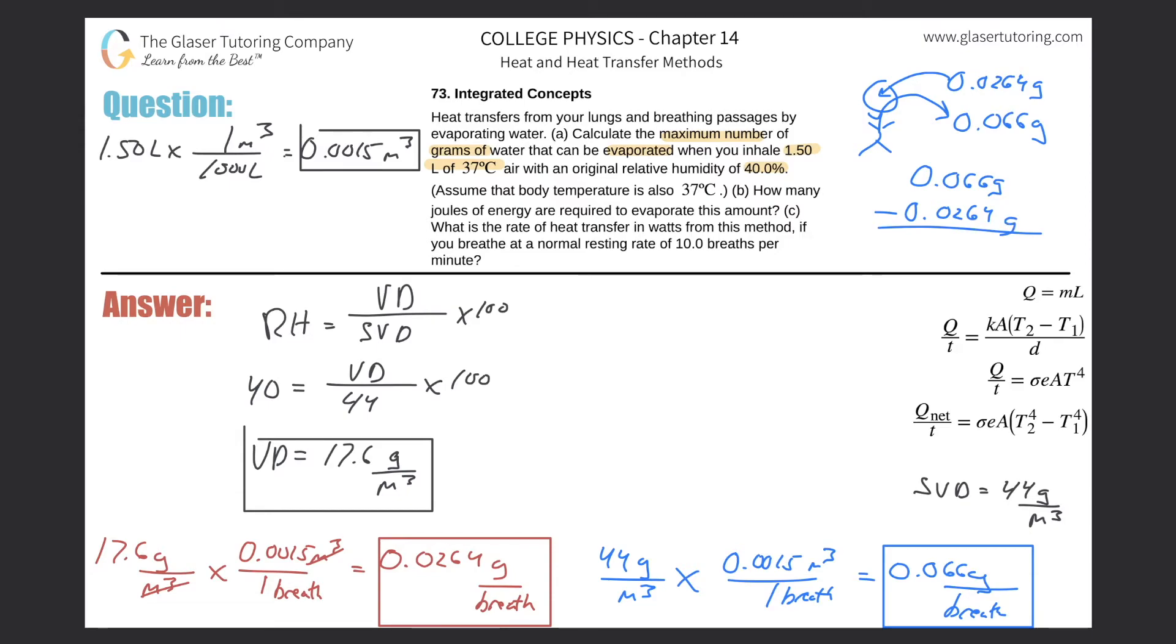Hopefully this makes intuitive sense. To find the amount that I can evaporate into the air, 0.066 minus 0.0264, we get about 0.0396 grams.